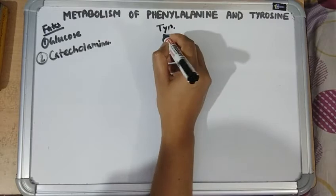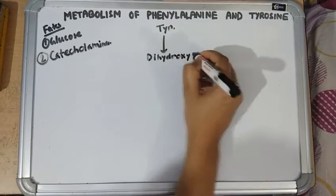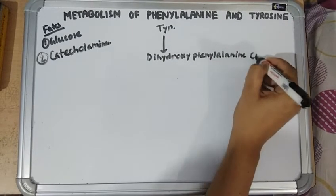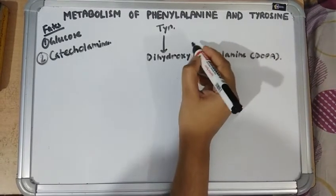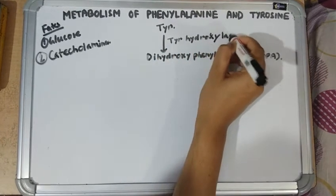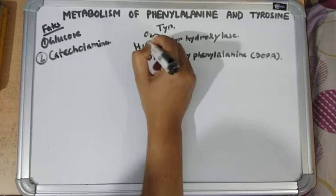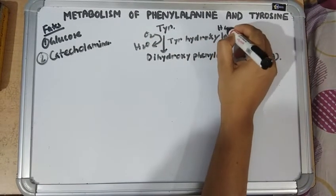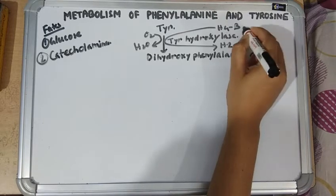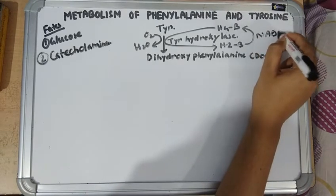Tyrosine is first converted into dihydroxyphenylalanine, or DOPA, by the enzyme tyrosine hydroxylase. Tetrahydrobiopterin is required as a cofactor, which is converted into dihydrobiopterin. Dihydrobiopterin can be reconverted into tetrahydrobiopterin by dihydrobiopterin reductase, again requiring NADPH.